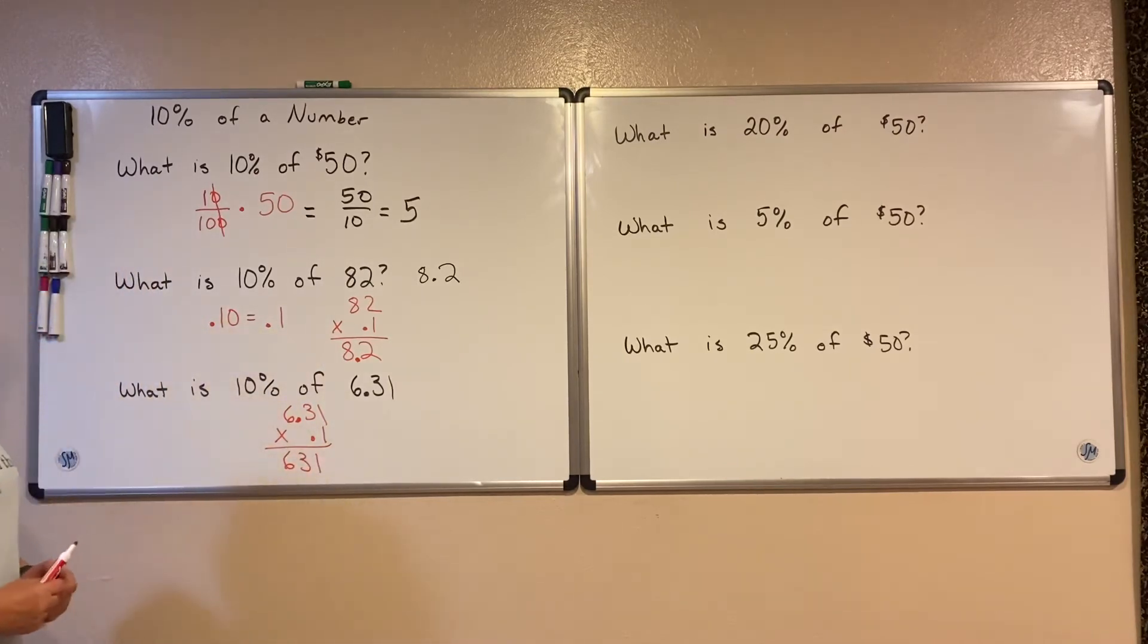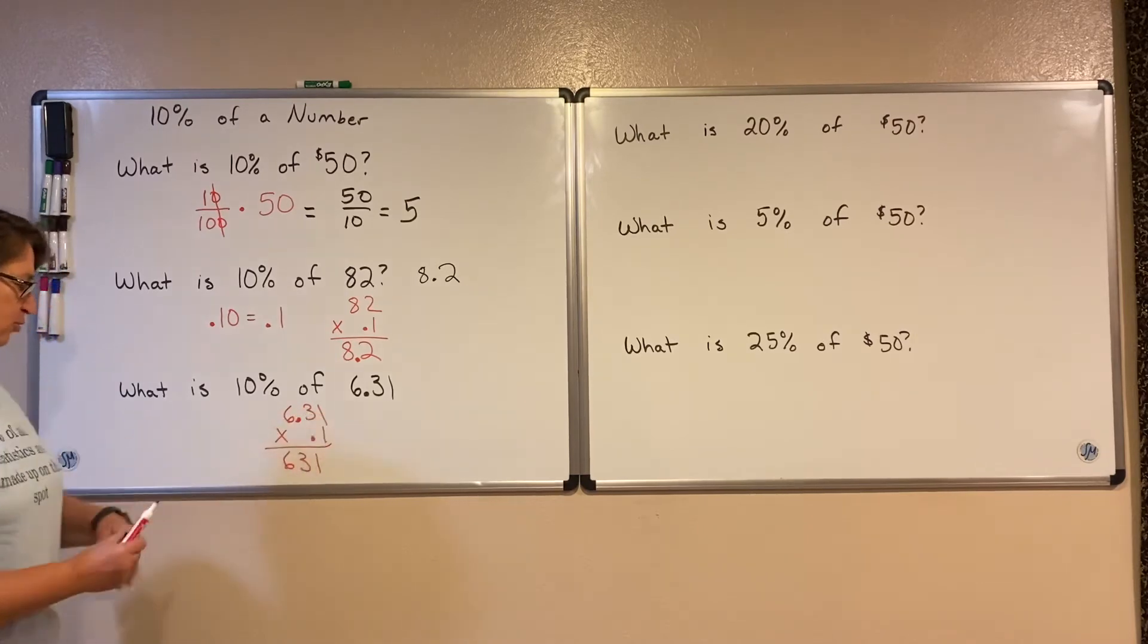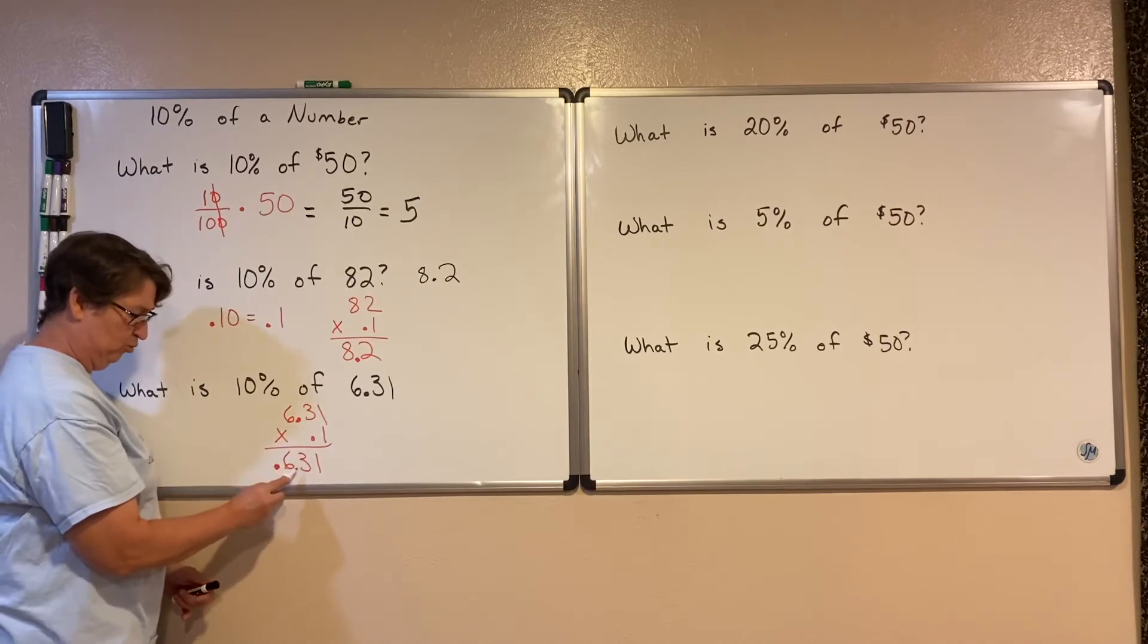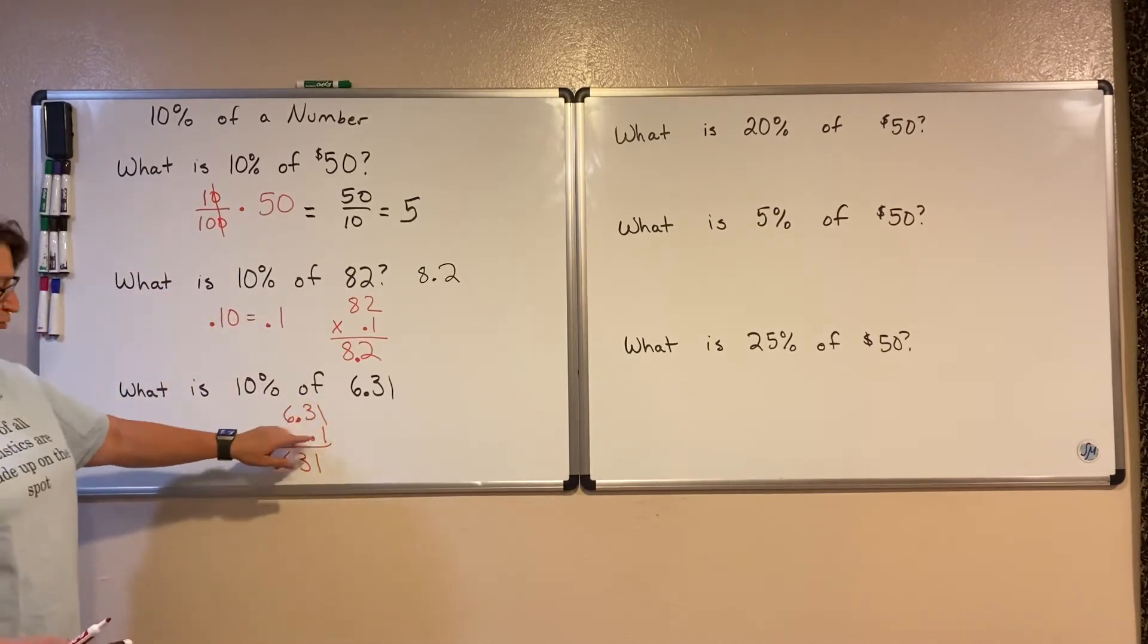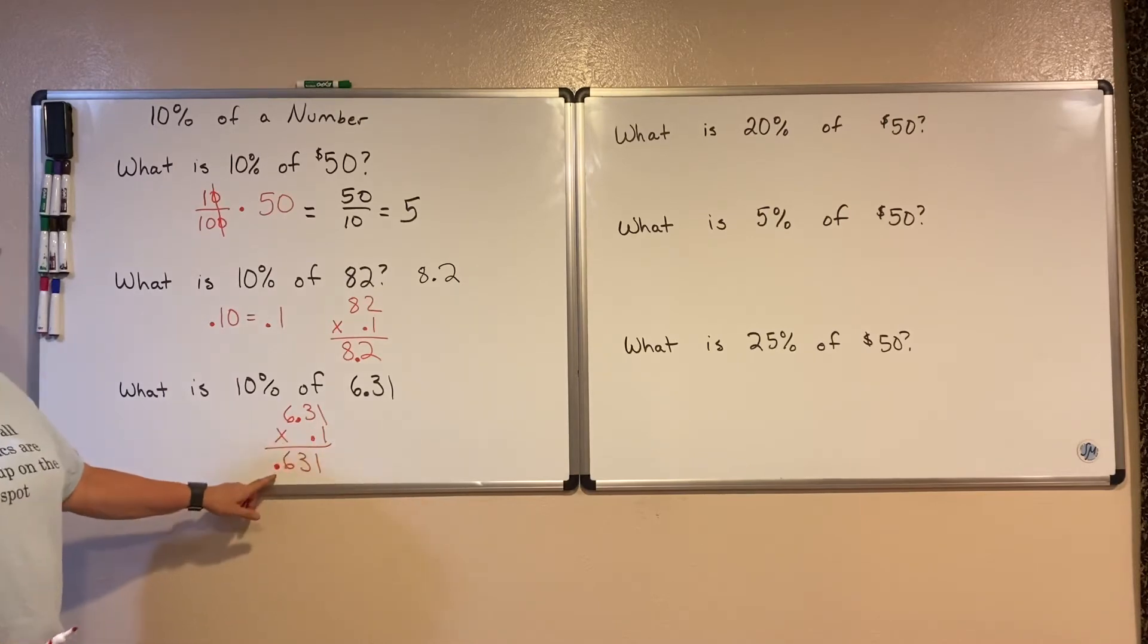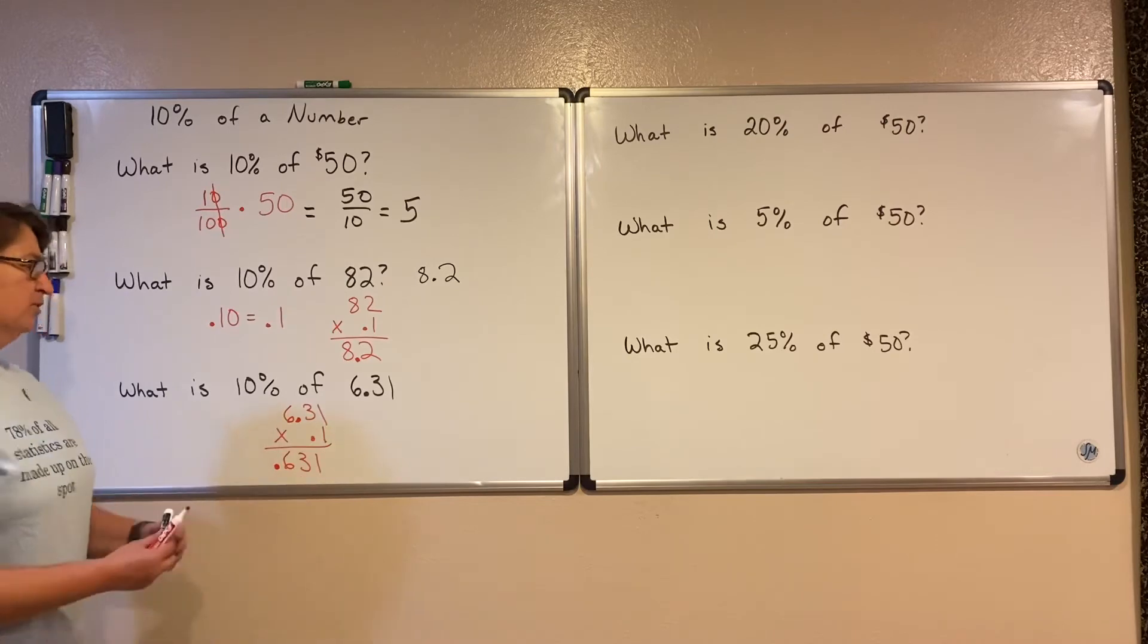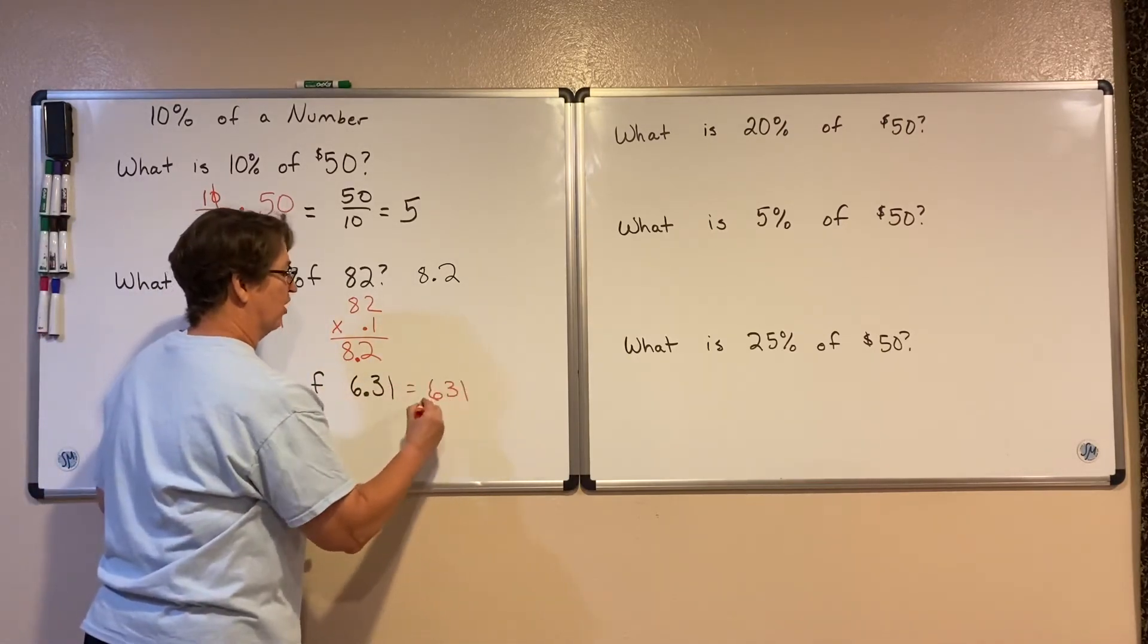Now I'll pay attention to the decimals. There are 1, 2, 3 numbers behind decimals. So in my product, I will have 3 numbers behind the decimal. 1, 2, 3 numbers behind the decimal. So 6 and 31 hundredths times 1/10 is equal to 631 thousandths. So this is equal to 631 thousandths.